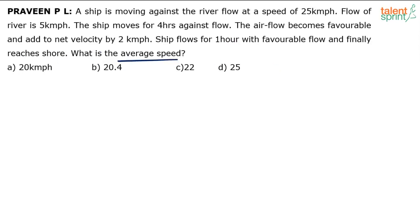Basically, you have to find out the average speed of the ship. You very well know that average speed is not the average of speeds. Average speed is total distance by total time. So all we have to do here is find out the total distance traveled by the ship and the total time taken to cover that distance.